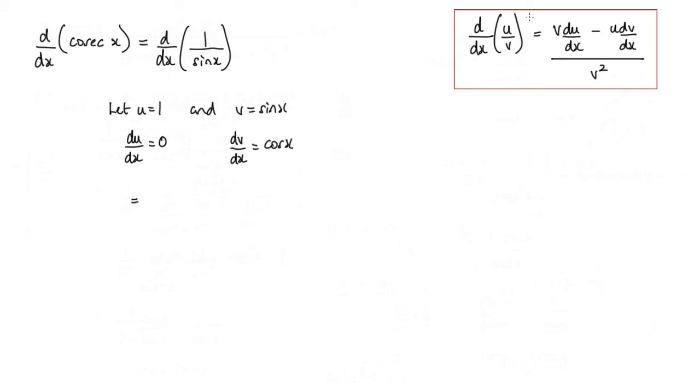So applying the quotient rule, we've got v times du by dx, obviously that will be 0, minus u times dv by dx, which will be cos x. And that is all over v squared, and that would be sin squared x.